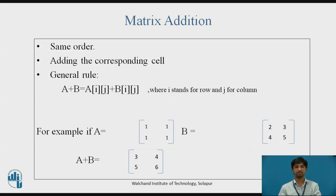The rule for matrix addition is that both matrices should have the same order. Here, same order means a similar number of rows and columns in both matrices. During the addition operation of two matrices, the corresponding cells of both matrices — that is a[i][j] and b[i][j] — will be added, where i and j are variables for row and column index.